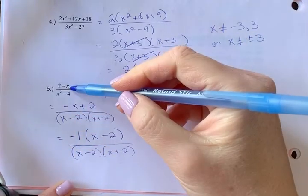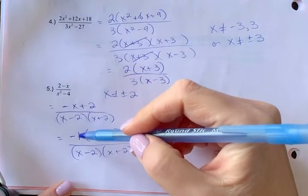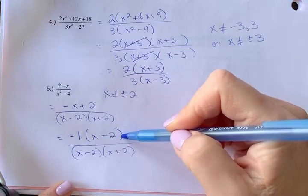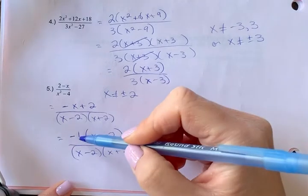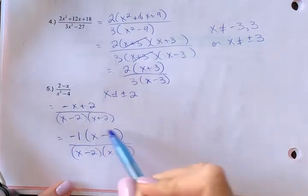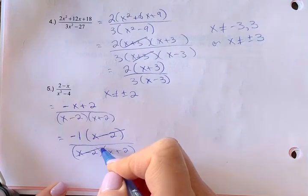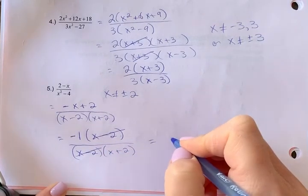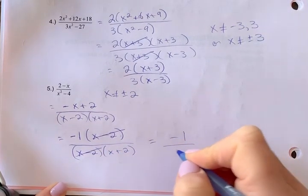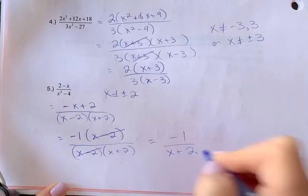You can jump from two minus x and recognize you need to factor out the negative one and change the signs to write it in the correct order, but make sure you factor out that negative one. This allows you to see that these binomials are exactly the same. So the answer is negative one over x plus two.